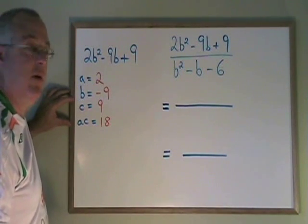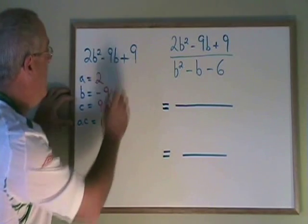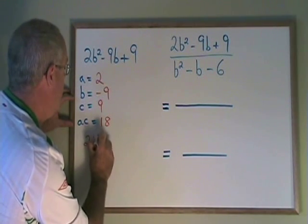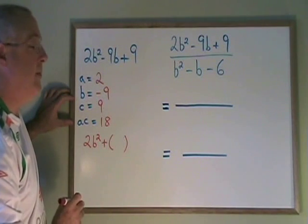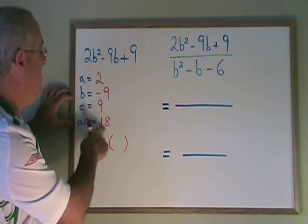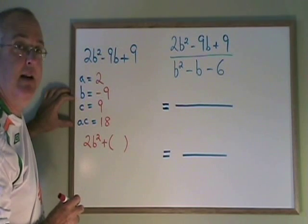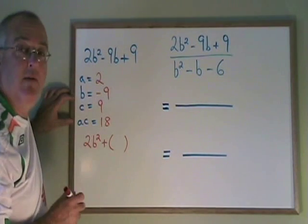Using the complex trinomial method, I rewrite the trinomial 2b squared plus, in a bracket, I put the answer to my question: what two numbers multiply to give 18, but add to give b negative 9.